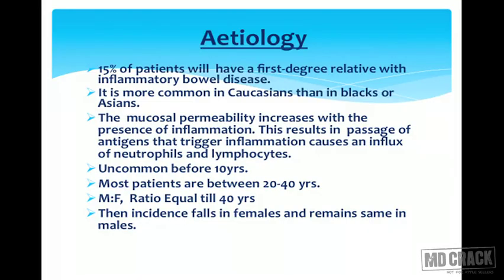Coming to etiology, 15% of patients will have first degree relatives with inflammatory bowel disease. It is more common in Caucasians than blacks or Asians. The mucosal permeability increases with the presence of inflammation, which results in passage of antigen that triggers inflammation and causes an influx of neutrophils and lymphocytes.